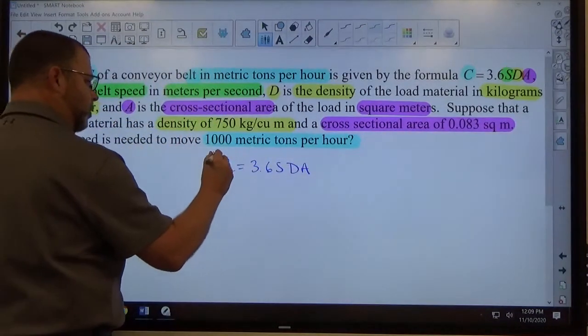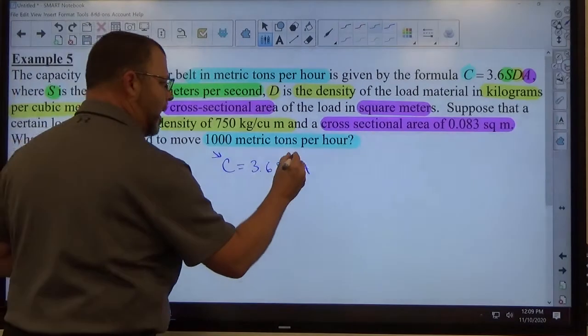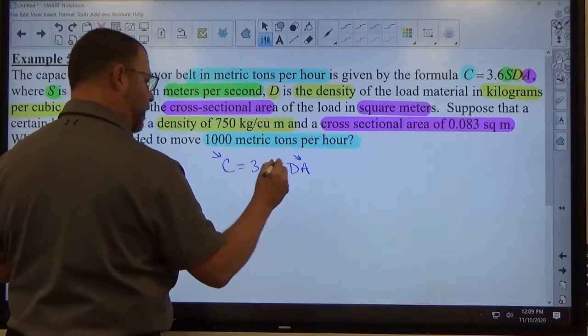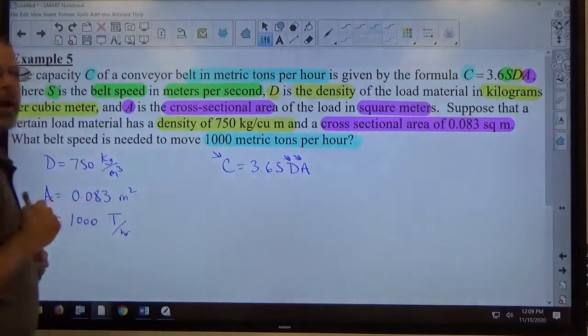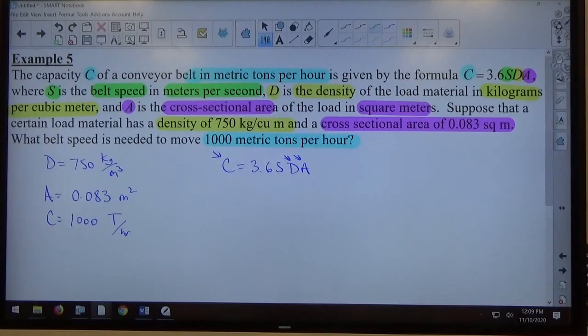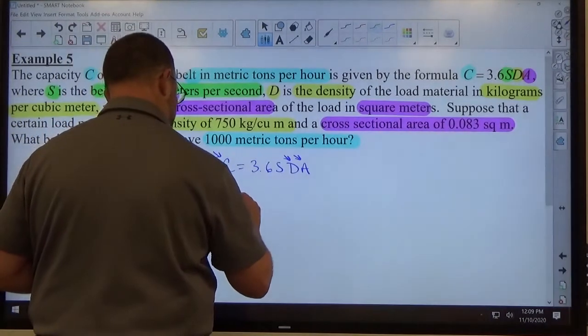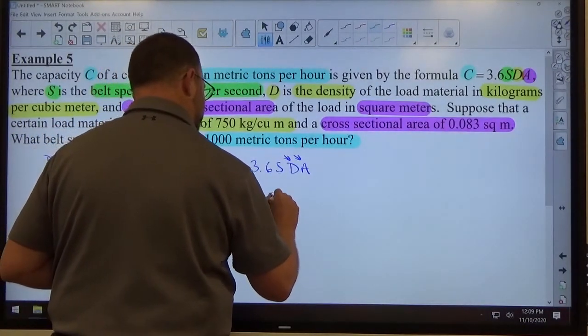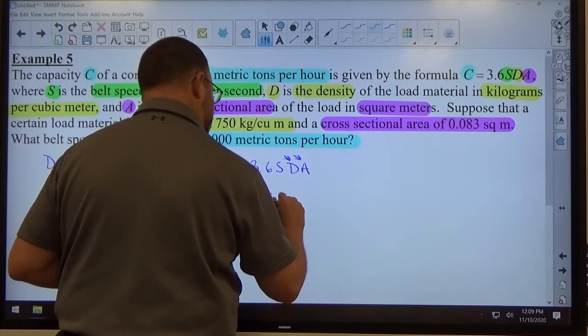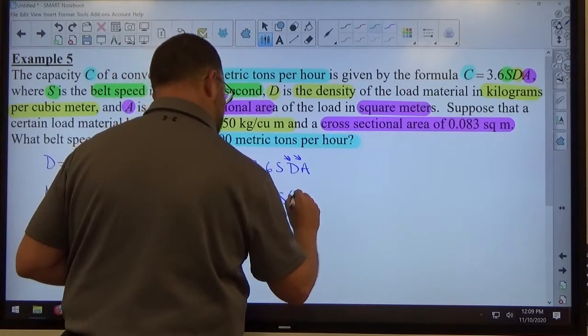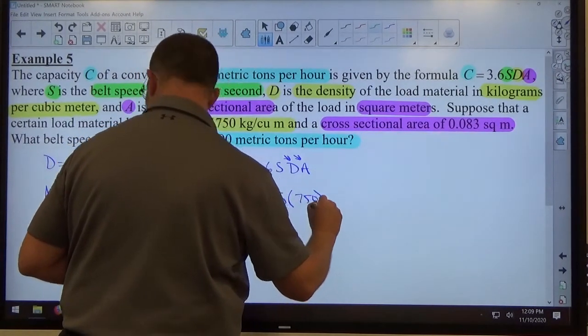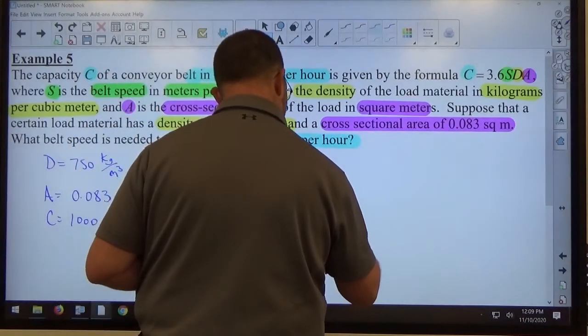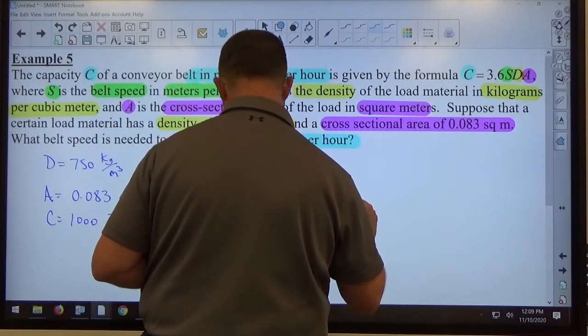They've told me what C equals. They've told me what A equals. And they've told me what D equals. They did not tell me what S equals. So if I substitute everything they told me into this problem, I'm looking at this: 1,000 equals 3.6 times S times 750 instead of D times 0.083 instead of A.